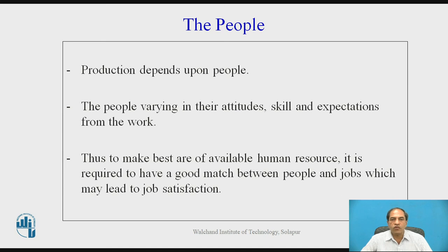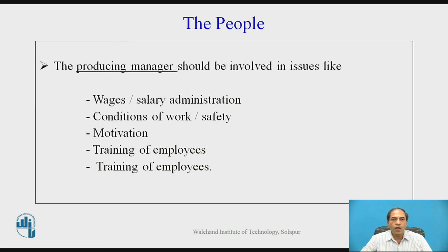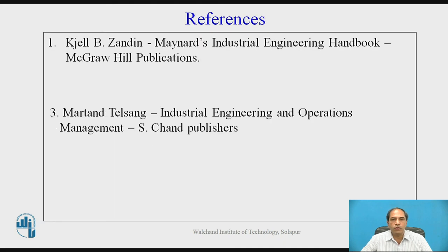The last P is very important because skilled people have their own attitudes, skills, and expectations about the job and from the work. Therefore, we need to consider proper balancing between these five parameters. The production manager should be involved in issues like wages, salaries, motivation, and training of employees. Especially when there is a transfer and promotion policy, the training function has to be taken into consideration as a key role.